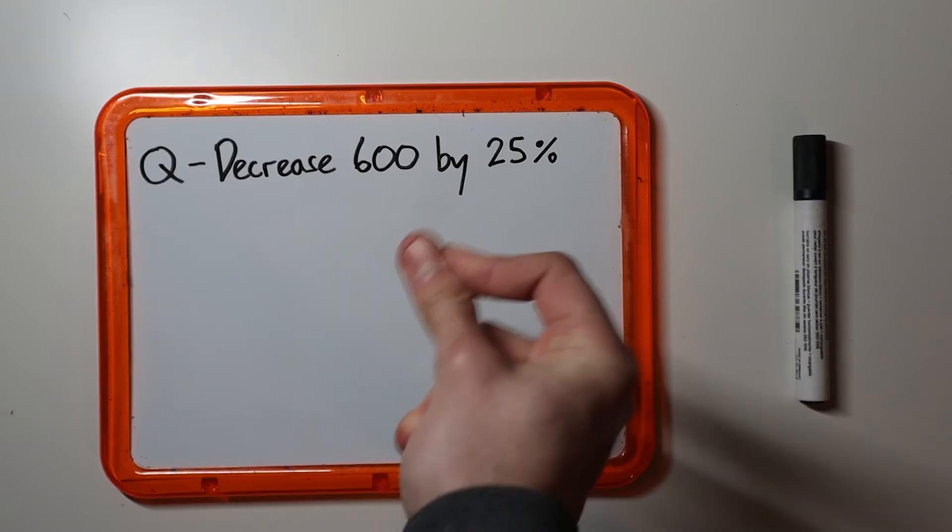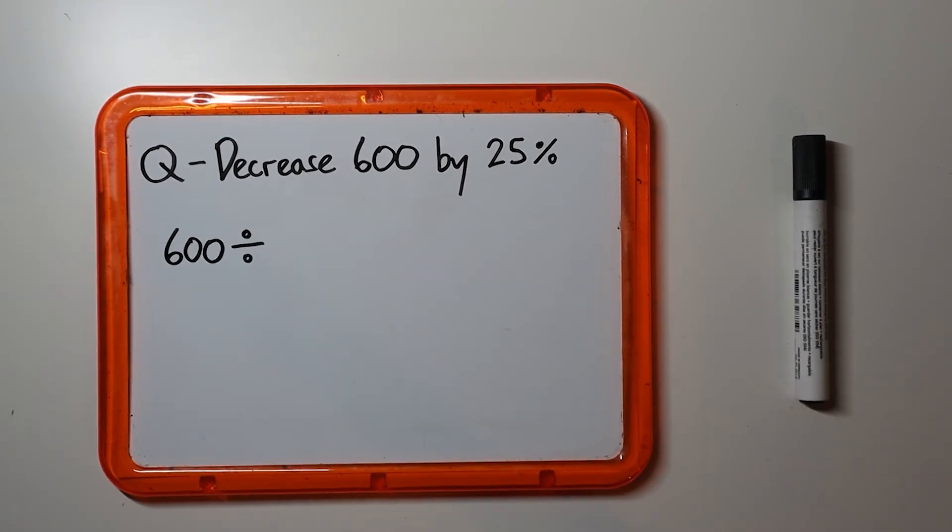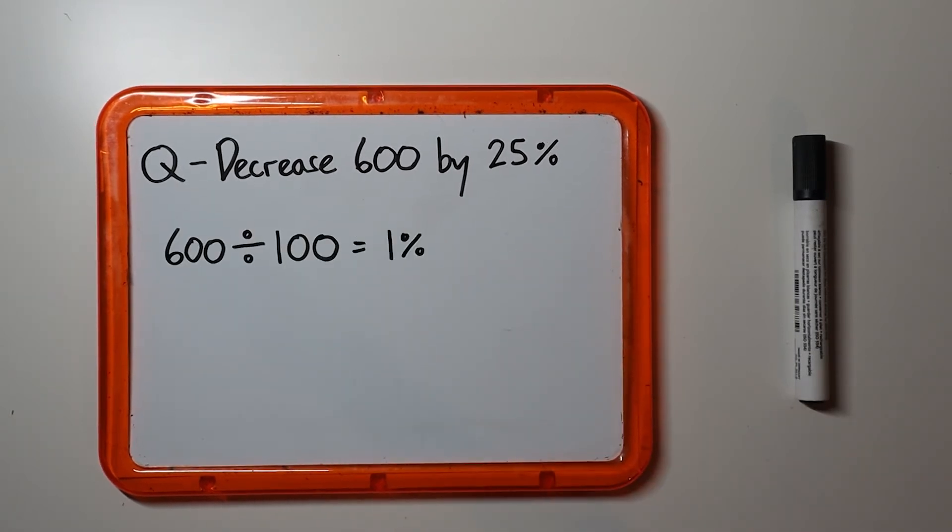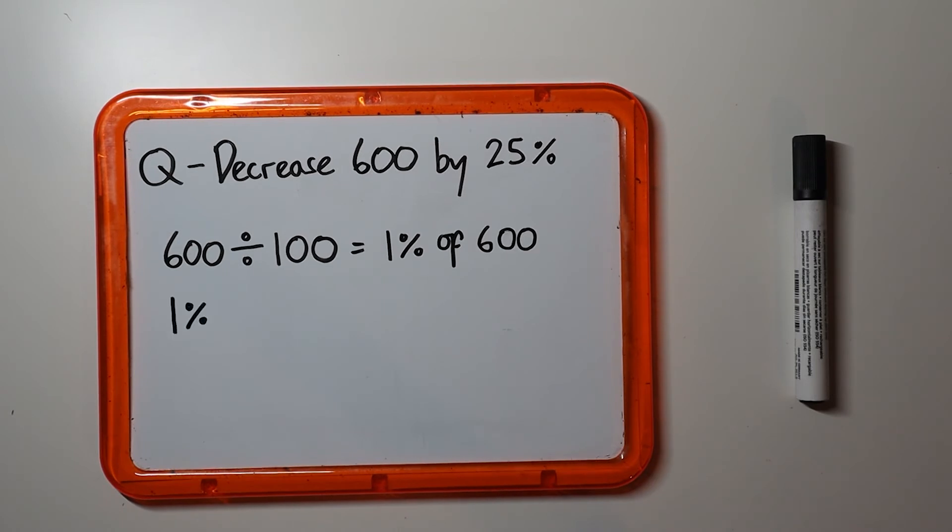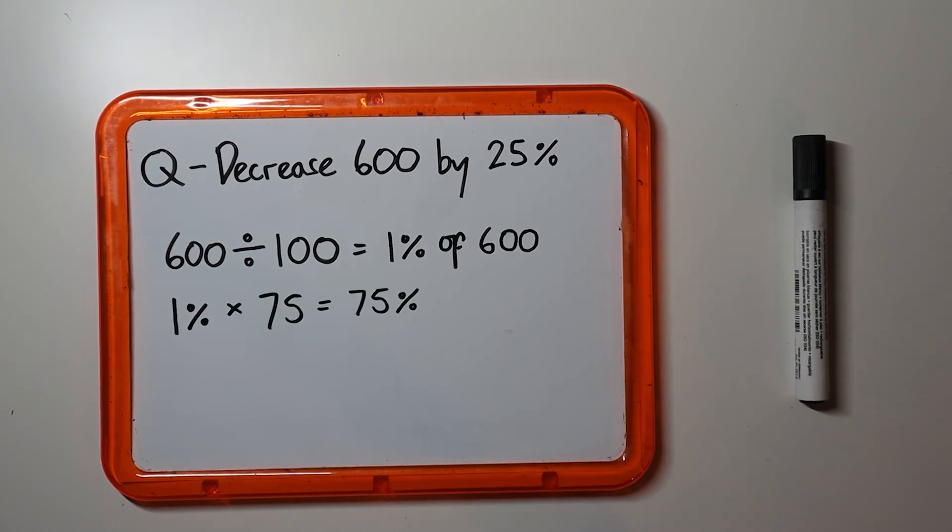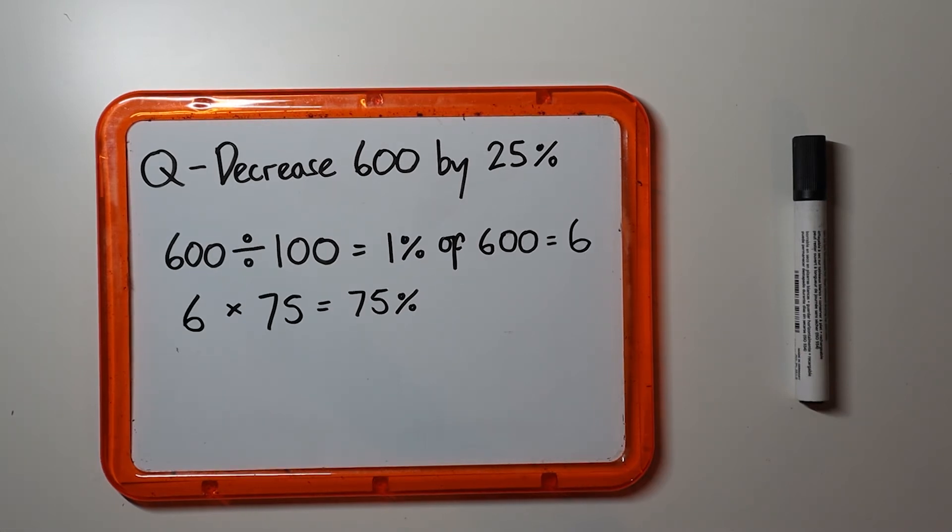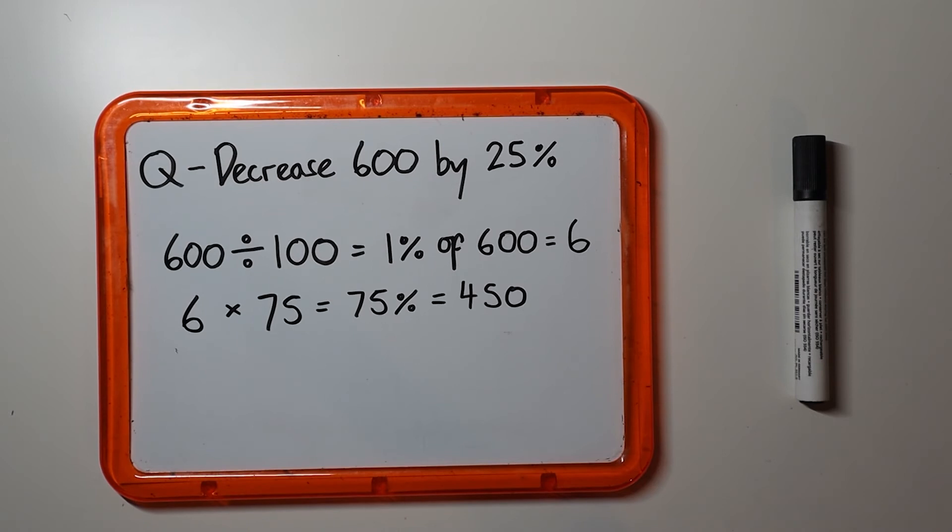However, this can also be solved by dividing 600 by 100 to find what 1% is, and then multiplying by 75 to find what 75% is. So 1% of 600 is 6, 6 times 75 is 450 which is the answer.